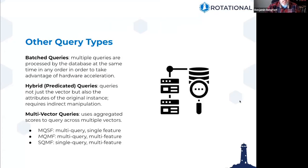In terms of other query types: batch queries take advantage of hardware acceleration. Hybrid or predicated queries allow you to query not just the vector but also the attributes of the original instance. And finally, multi-vector queries — if you see the terms MQSF, MQMF, or SQMF — these refer to multi-vector queries that use aggregations and aggregated scores to query across multiple vectors. Multi-vector queries are often associated with images, which are frequently represented as multiple vectors using color components or different types of convolutions.